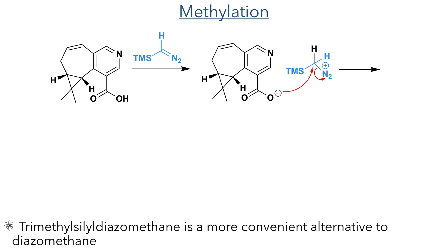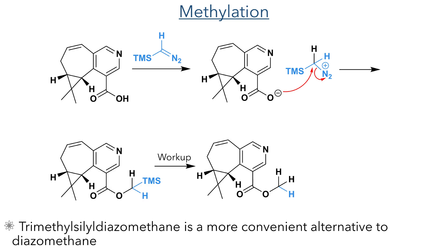The carboxylic acid was then converted to a methyl ester. TMS-diazomethane was used as this is a more convenient alternative to diazomethane. This is protonated by the acid, which then acts as a nucleophile and eliminates nitrogen gas. The TMS group is cleaved upon workup to reveal the methyl ester.